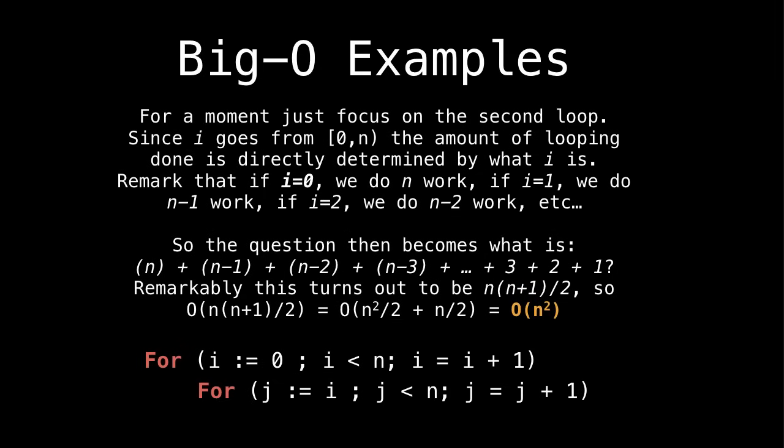Okay, let's go over the solution. So first, just focus on the second loop. The first loop isn't as important. So since i goes from zero to n, the amount of looping done is going to be directly related to what i is. And remember, i is changing from the outer loop. So if we fix i to be zero, we do n work. If we fix i to be one, we do n minus one work. If we fix i to be two, we do n minus two work, and etc. So the question then becomes, what is n + (n-1) + (n-2) + (n-3), and so on? Well, this is a well known identity, and it turns out to be n(n+1)/2. So if we wrap this in the Big O, we split our equation, we can see that this is Big O of n².